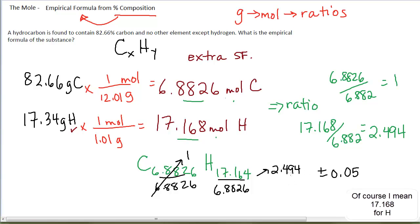But 2.494 is not within 0.05 of a whole number. And so mathematically, my ratio is 1 to 2.5. But that's not a whole number ratio.